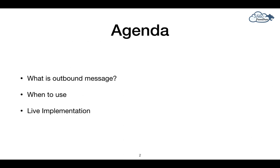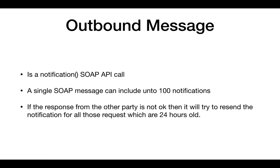We will talk about what an outbound message is, when we need to use it, and then we will see a live implementation. Basically, an outbound message is a SOAP API call — there is a method in SOAP API called notification.